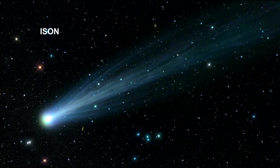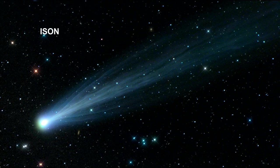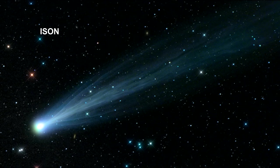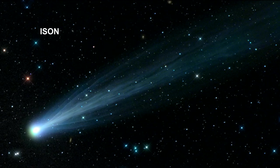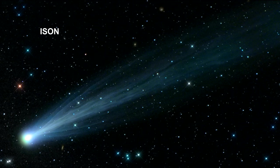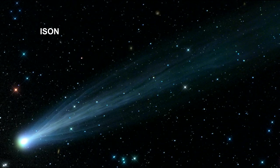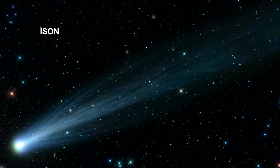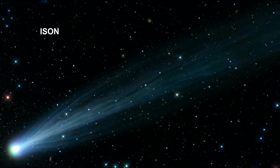Comet nuclei range from a few hundred meters to tens of kilometers across. The coma and tail are much larger, and if sufficiently bright, can be seen from Earth without a telescope, like this image of Comet ISON.